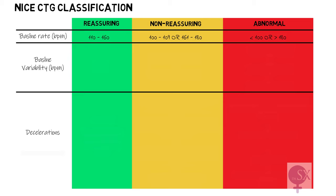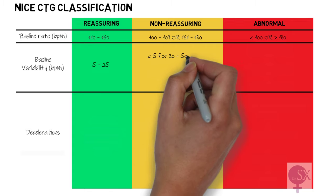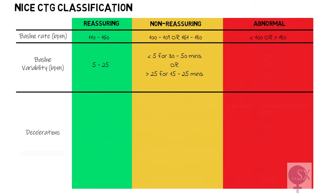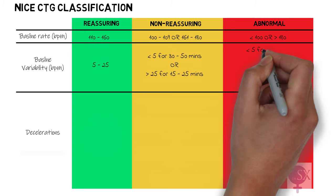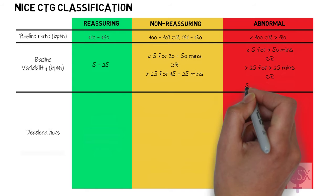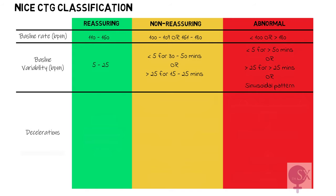Next, the baseline variability. Reassuring baseline variability is at 5 to 25 beats per minute. It is non-reassuring if less than 5 beats per minute for 30 to 50 minutes, or more than 25 beats per minute for 15 to 25 minutes. And it is abnormal if it has a sinusoidal pattern.